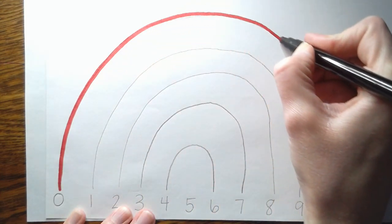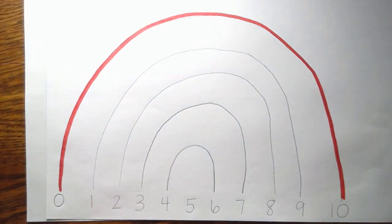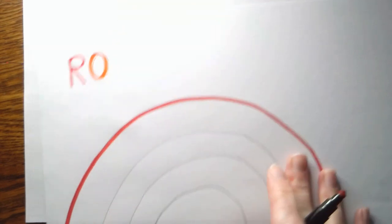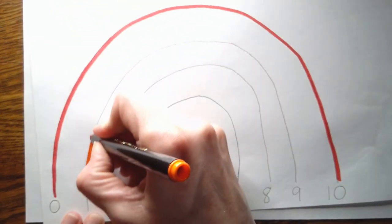Okay, here we go. Anybody know the next color in the rainbow? Starts with an O. What is that color? Starts with an O. Orange. Good job. So I'm going to trace my next arch with an orange.